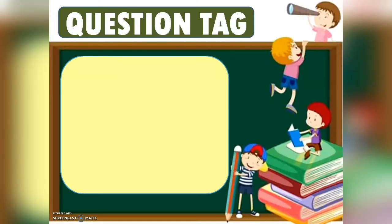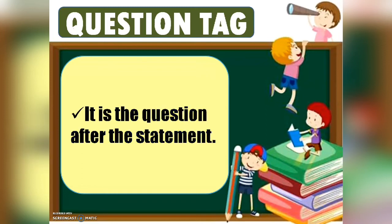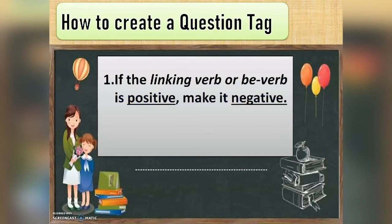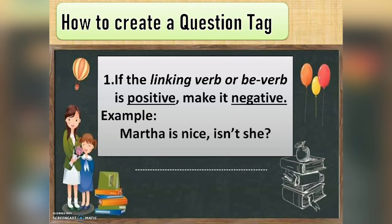When we say question tag, it is the question after the statement. So, how do we create a question tag? First, if the linking verb or be verb is positive, we have to make it negative. Example: 'Martha is nice, isn't she?'